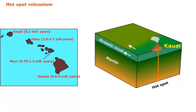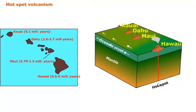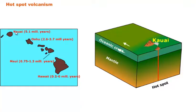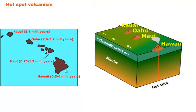Next up is hotspot volcanism. A hotspot is a section in Earth's crust where magma is able to push its way through. The most famous example is the Hawaiian Islands — each island is a hotspot where magma pushed through the ocean floor, cooled, formed solid rock, and grew big enough to pop above sea level. The islands move towards the northwest; the northwesternmost island, Kauai, is the oldest, and they get younger moving southeast, with the Big Island of Hawaii being the youngest — only about half a million years old and still volcanic.